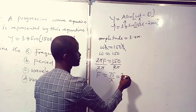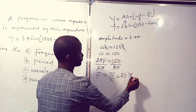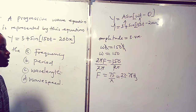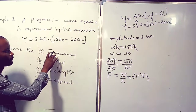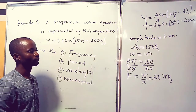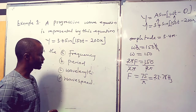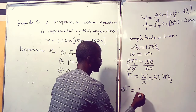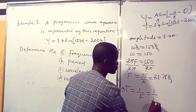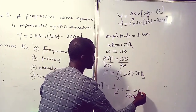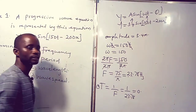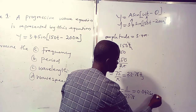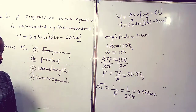And then 75 over π equals 23.78 Hz for our frequency. Remember that frequency and period are inverse of each other. That means period T equals 1 over f, which equals 1 over 23.78, equal to 0.042 seconds. That's the value of the period.